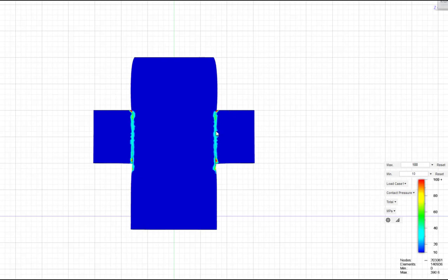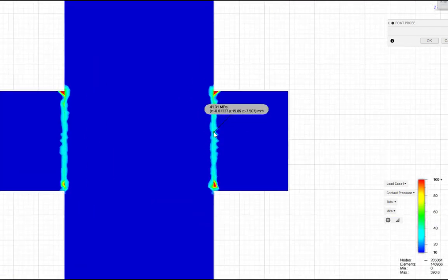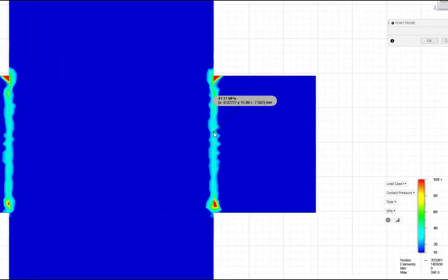And you see that the interface between the collar and the shaft has a contact pressure. We can use our inspection tool to create a point probe, and we can measure that contact pressure. We can zoom in,